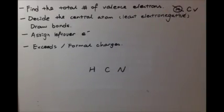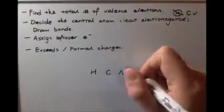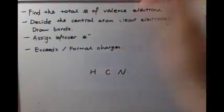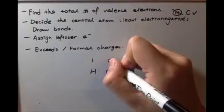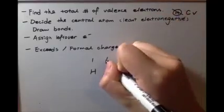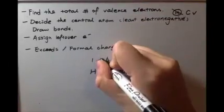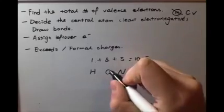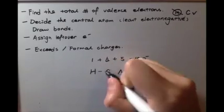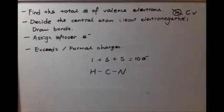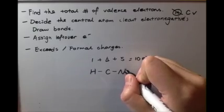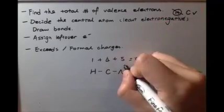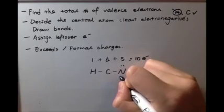Let's do hydrogen cyanide (HCN). We first count the valence electrons. Hydrogen is in group one, carbon is in group four, and nitrogen is in group five. We have a total of ten valence electrons. We first put bonds between them — so now carbon has four and nitrogen has two.